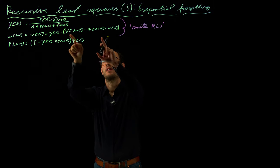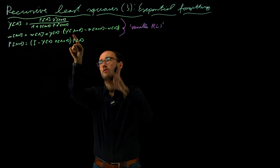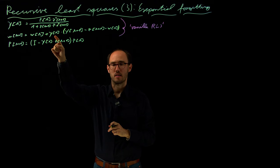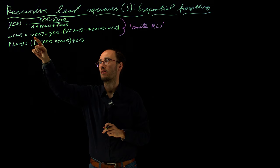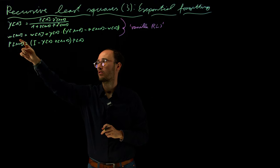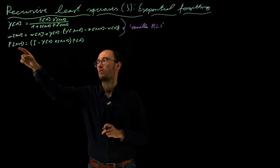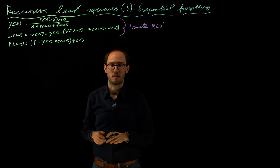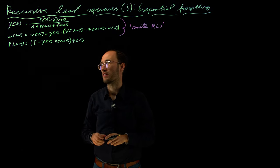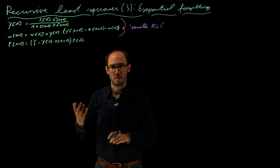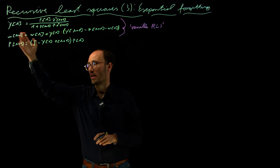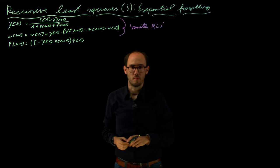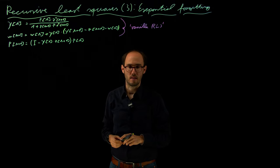This will be our estimation error. This estimation error will be amplified by the correction factor, and we will update our old parameter vector to the new one. Then we also update here our P matrix, which is basically our normalized covariance matrix, which is basically an indicator for how uncertain we think, or the estimator thinks, the parameter vector W can be estimated.